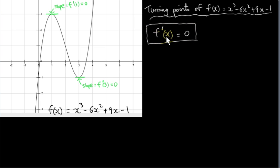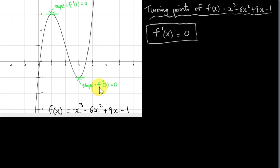The derivative of the function is the slope of a tangent to the graph of the function at some value x. For this particular function, the slope of a tangent at x equals 1 is 0 — we have a horizontal tangent at x equals 1, so f prime at 1 is 0. Similarly, f prime at 3 is 0. So we have turning points at x equals 1 and at x equals 3 for this cubic function.